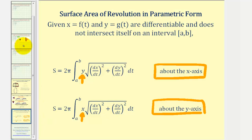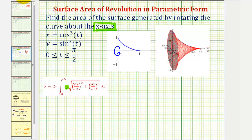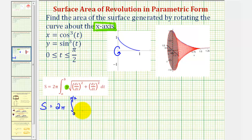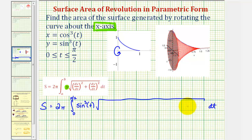So now let's go back to our example and find the surface area. The surface area is going to be equal to two pi times the integral from zero to pi over two, and the integrand is going to be y times the square root. In this case, y is equal to sine cubed t, and then we'll have the square root of dx/dt squared plus dy/dt squared, dt.